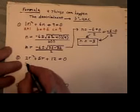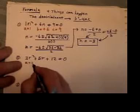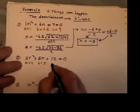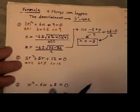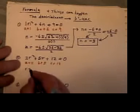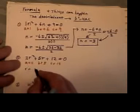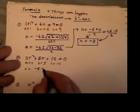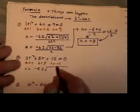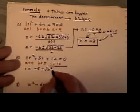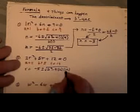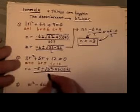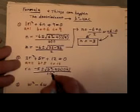The second thing that could happen: a is 2, b is 5, c is 12. Notice before I even start the quadratic formula, I made sure one side is equal to 0. The opposite of b is negative 5, plus or minus b squared, which is 5 squared, minus 4 times a, which is 2, times c, which is 12, all over 2 times a, and a is 2.